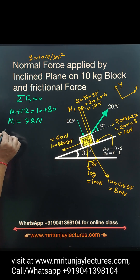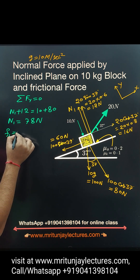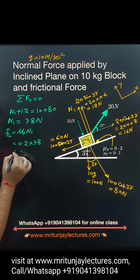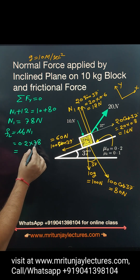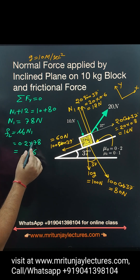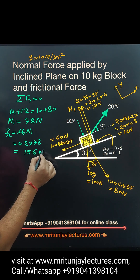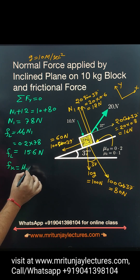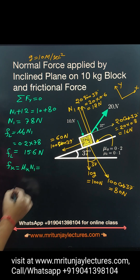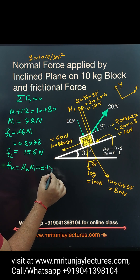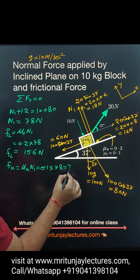Now we focus on the limiting frictional force. Fl equals mu_s into N1. Mu_s is 0.2 and N1 is 78, so Fl equals 15.6 Newton. And the kinetic frictional force Fk equals mu_k into N1. Mu_k is 0.1, so Fk equals 0.1 into 78 — that is 7.8 Newton.